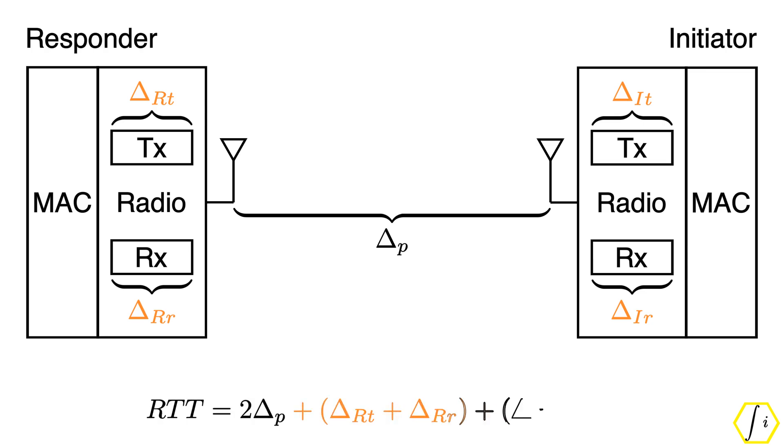The group delays of the transmitter and receiver at the responder and initiator side get added to the RTT estimate as shown in this equation. The solution to this problem is to perform group delay calibration to measure the sum of the transmitter and receiver delays. The initiator is responsible for removing its group delay contribution from T1 and T4.